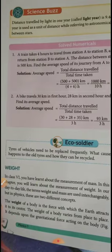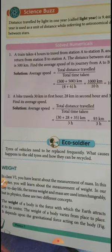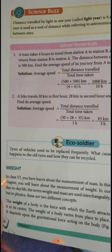The weight of a body is the force by which the earth attracts it towards its center. So weight will vary from place to place. Acceleration due to gravity is maximum at the poles and minimum at the equator, so a person travelling towards the pole will feel their weight to be higher compared to at the equator.